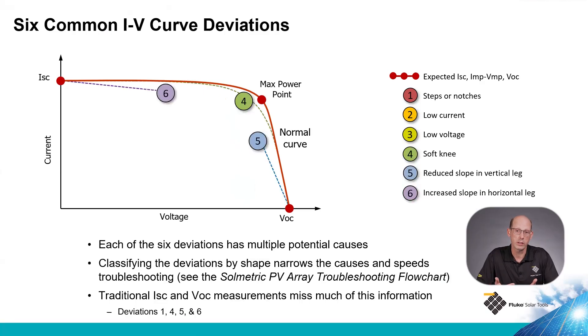The fourth, fifth, and sixth deviations are all related. Number four is a reduction of the maximum power point and it's typically caused by either the fifth or the sixth deviation, and that would be reduced slope in the vertical leg or increased slope in the horizontal leg. There are many different causes that can result in this type of IV curve deviation.